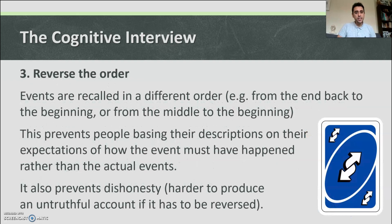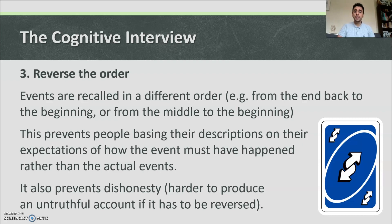Technique three: reverse the order. Events are recalled in a different order — for example, from the end back to the beginning, or from the middle to the beginning. This prevents people basing their descriptions on expectations of how the event must have happened rather than actual events. It also prevents dishonesty, as it's harder to produce an untruthful account if it has to be reversed.